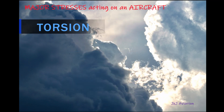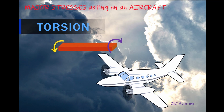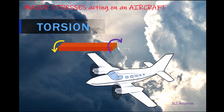Torsion. This is a stress which can cause an object to twist. In an aircraft, the rotation of the shafts inside the engine creates a torsional stress on the engine and the wings.